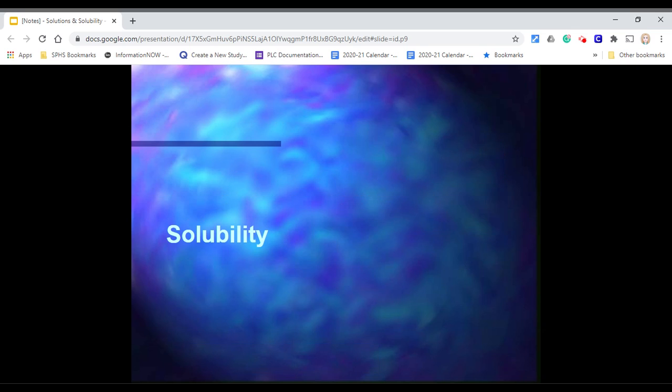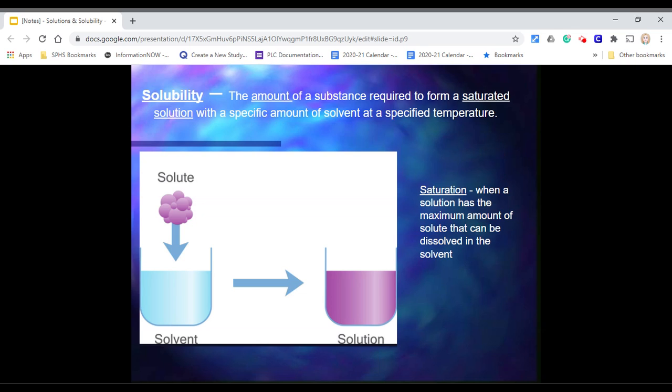The next thing we're going to discuss is solubility. Solubility is the amount of substance required to form a saturated solution with a specific amount of solvent at a specific temperature. All that to say is solubility is the amount of solute that can be dissolved in a specified amount of solvent.